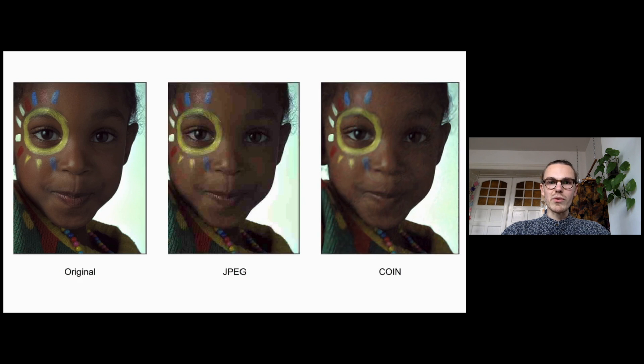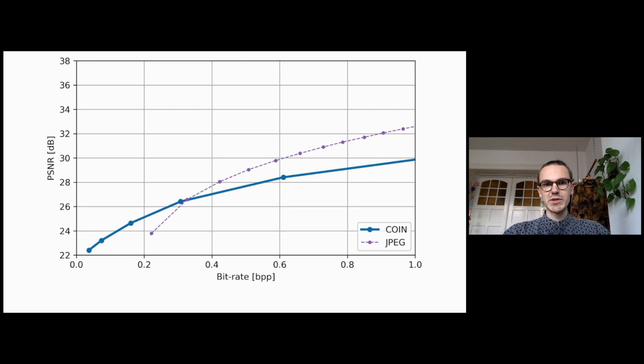At 0.3 BPP, now on the right-hand side, the two methods perform approximately on par. Let's zoom in onto the highlighted points. We can see that COIN introduces smudgy impressionist-like artifacts, qualitatively different from the blocky artifacts introduced by JPEG.